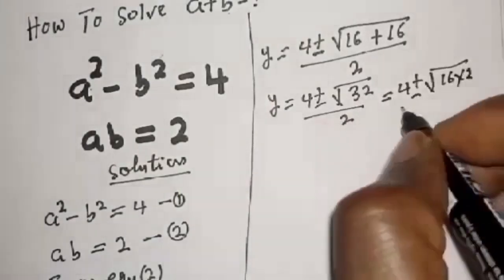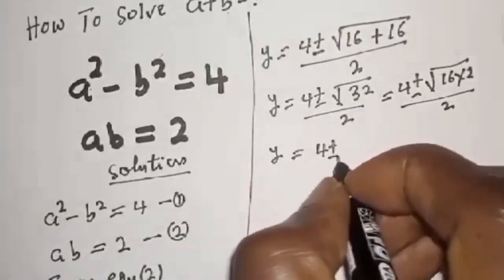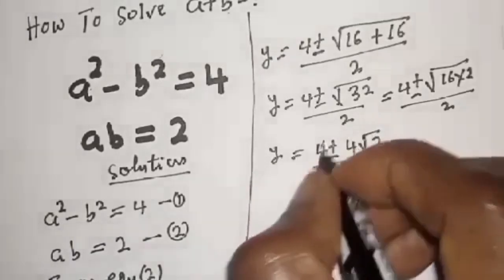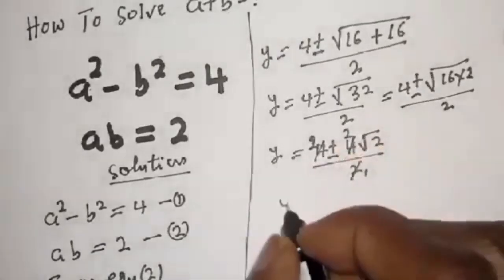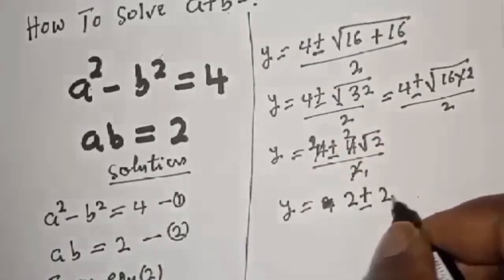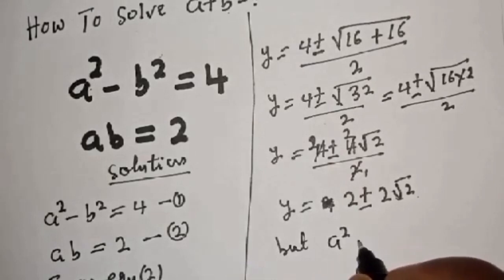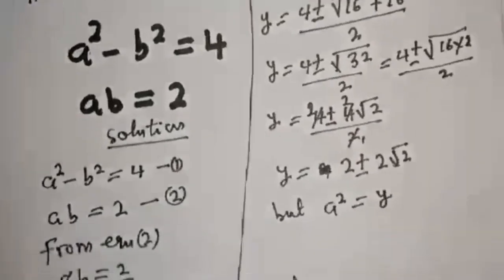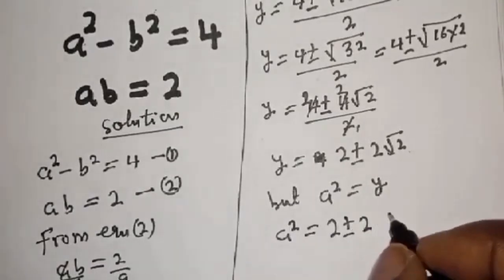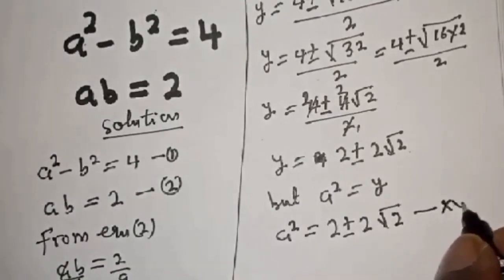This simplifies to 4 plus or minus square root of 16 times 2 over 2, giving y equals 4 plus or minus 4 root 2 over 2, which simplifies to y equals 2 plus or minus 2 root 2. Since a squared equals y, we have a squared equals 2 plus or minus 2 root 2. Let's call this equation star star.